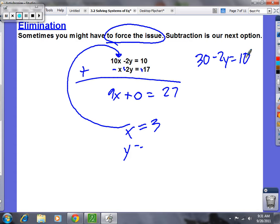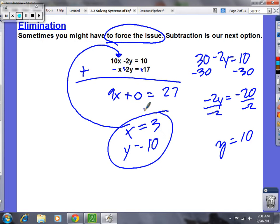Minus 2y equals 10. So now you got to solve for y. Get rid of the 30. Minus 30, minus 30. -2y equals -20. Divide by -2. Y equals 10. Who likes elimination better than substitution?